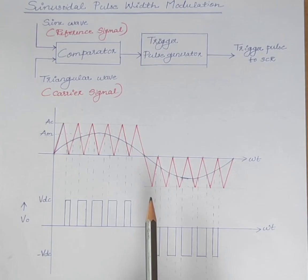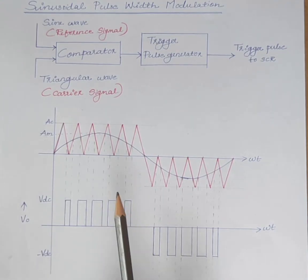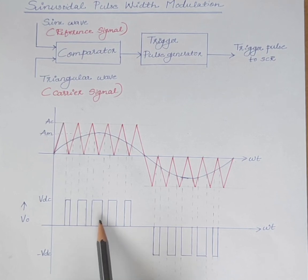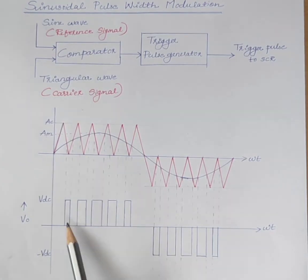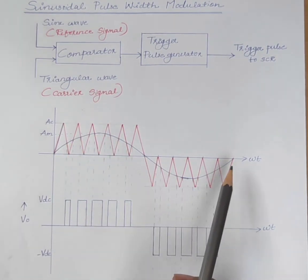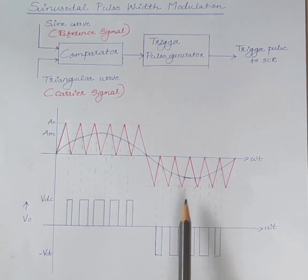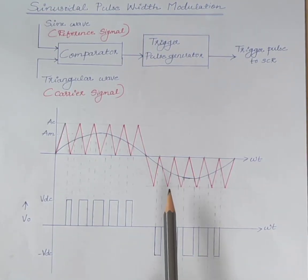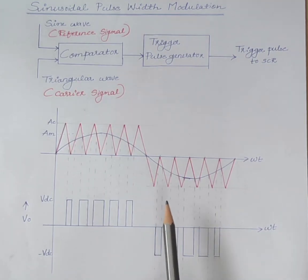Like multiple pulse width modulation, in sinusoidal pulse width modulation also, several pulses per half cycle are obtained. In multiple pulse width modulation, the pulses are of equal width. But in sinusoidal pulse width modulation, the width of each pulse is varied proportional to the amplitude of the sine wave. The main advantages of pulse width modulation techniques are: the output voltage of the inverter can be controlled without any additional components, and the harmonics at the output of the inverter can be minimized along with its output voltage control.